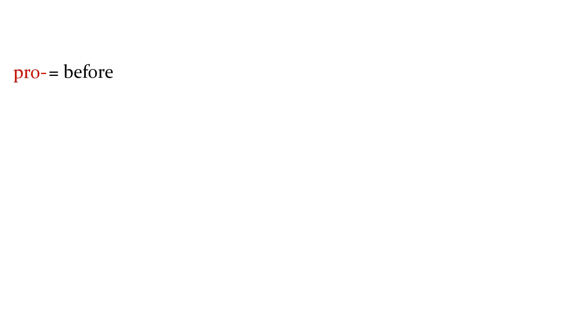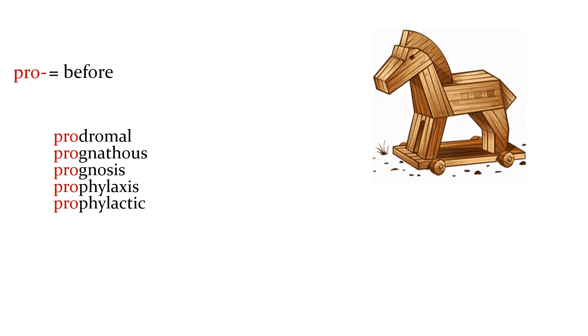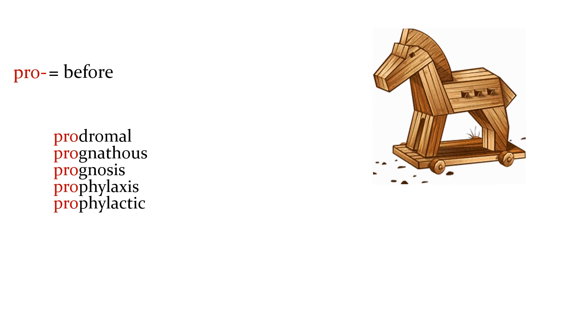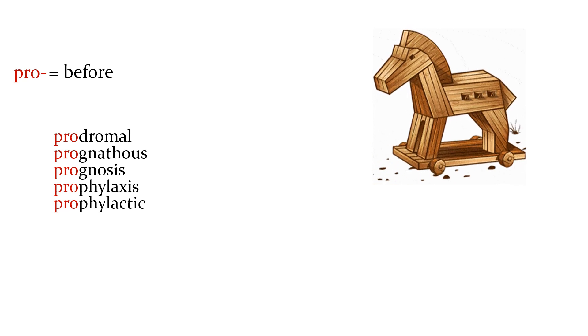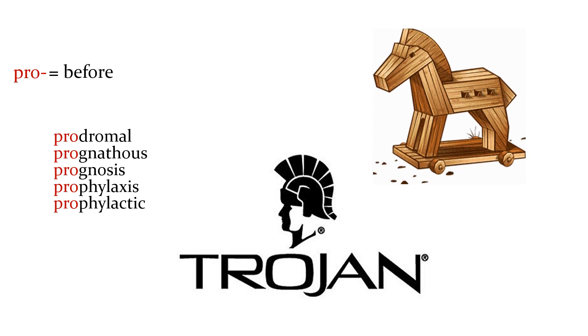Next we have pro, and pro means before. This is an easy one to confuse with others like pre. We have prodromal, prognathis, prognosis that's one I'm sure many of you have heard before, prophylaxis, prophylactic which is related to the one above it. If you don't know what a prophylactic is, you might remember the story of the Trojan horse. The Greeks had to create it because they could not penetrate the walls of the city of Troy. On that very delicate train of thought, I will leave you with this for your own research to help you learn the word prophylactic.